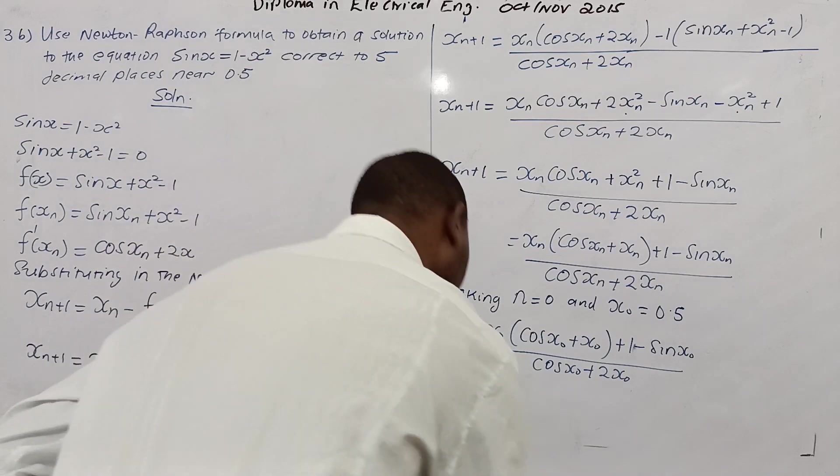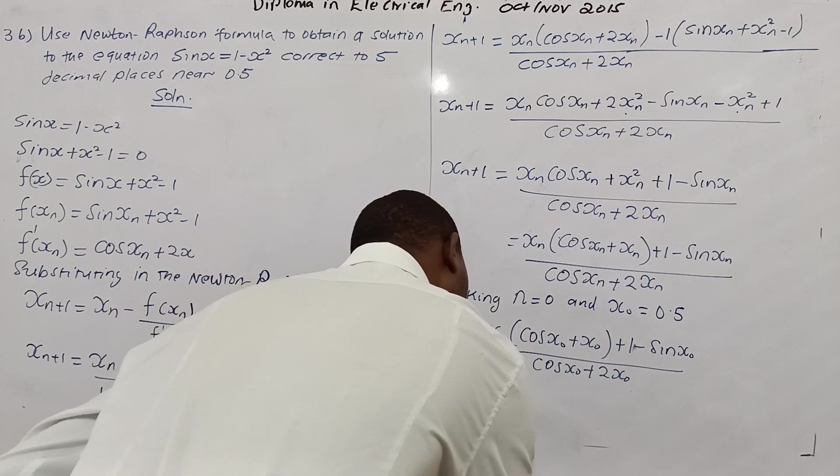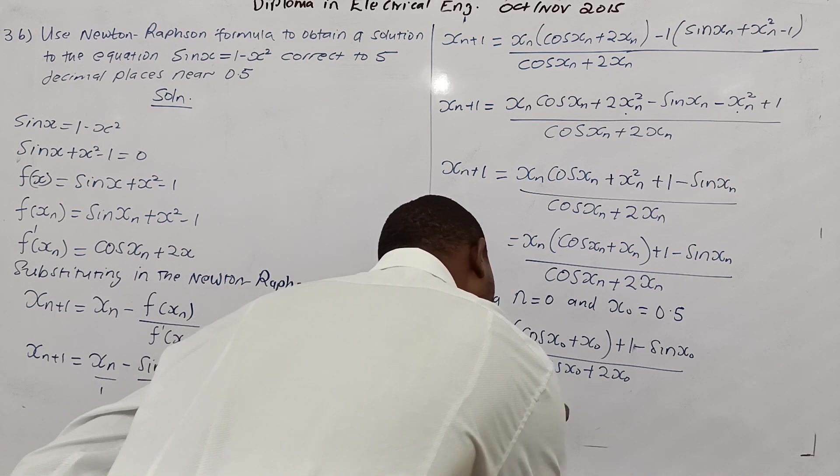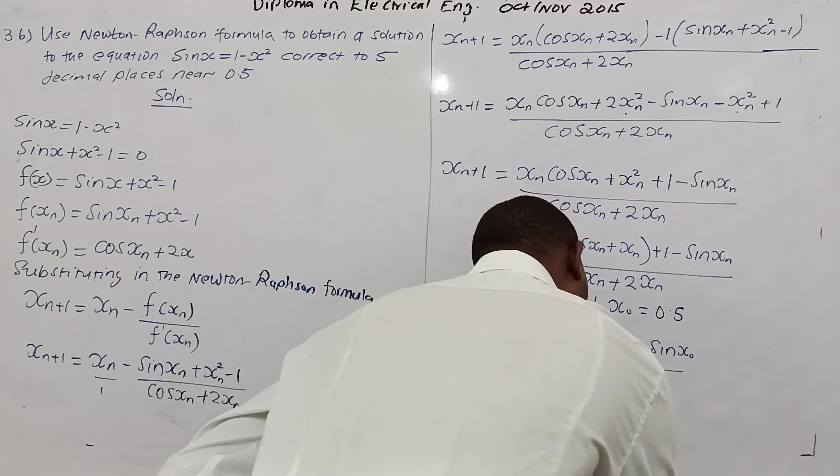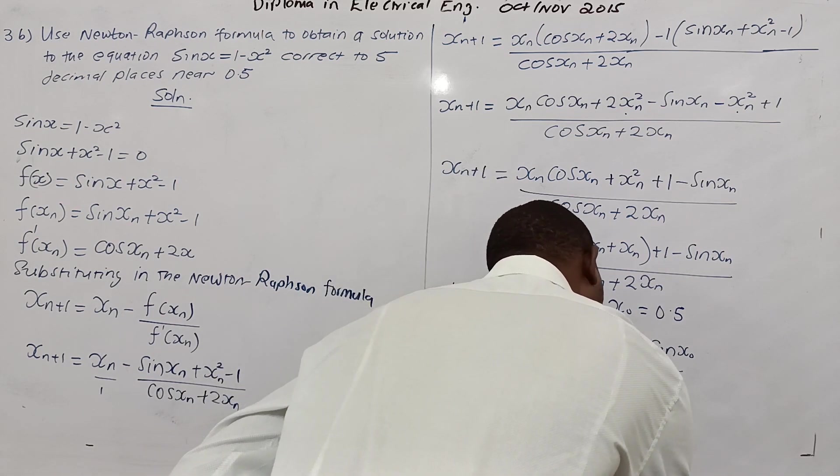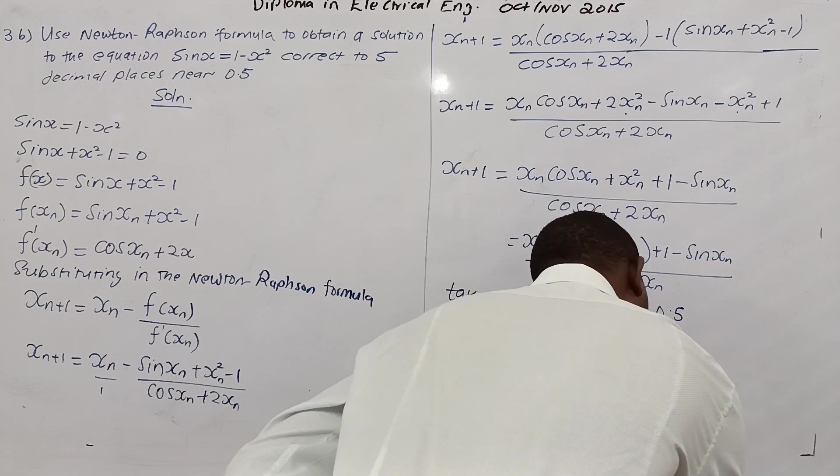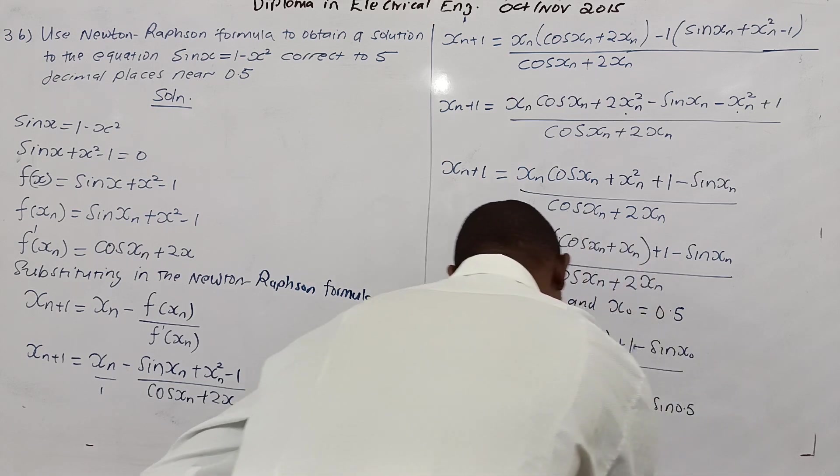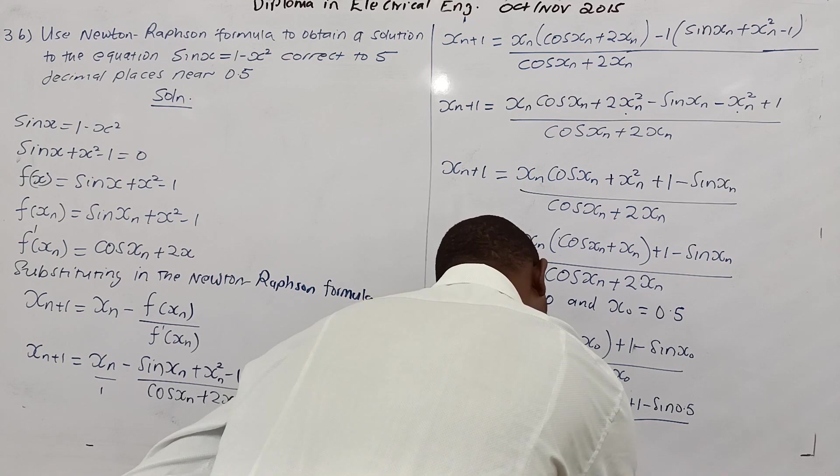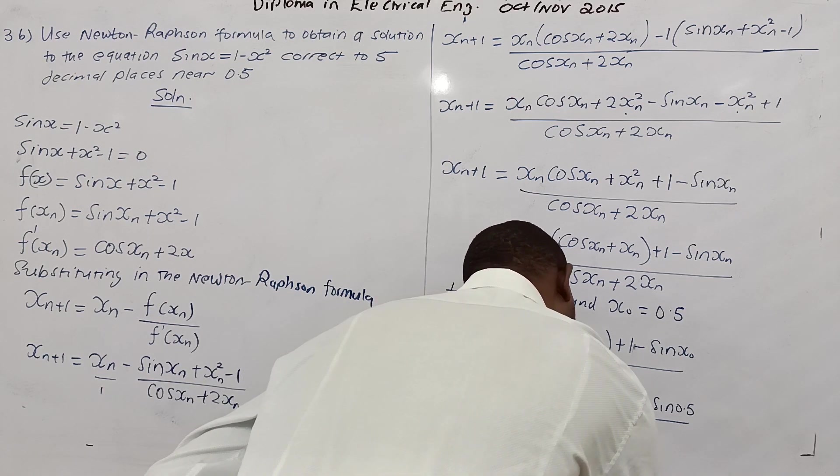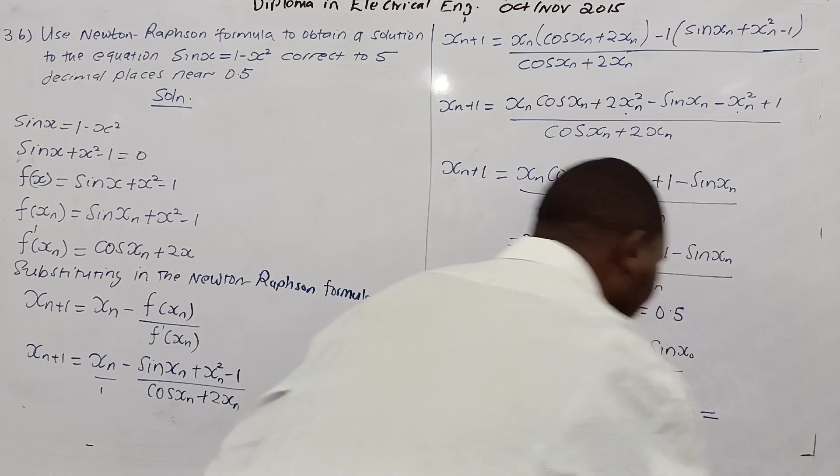Now x1 will be equal to 0.5 cos 0.5 plus 0.5, close bracket, plus 1, minus sine 0.5, all over cos 0.5 plus 2 times 0.5. Let's see what we get.